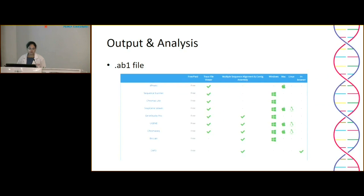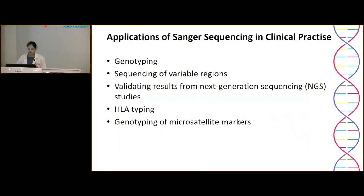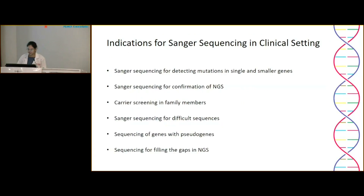Applications of Sanger sequencing include genotyping, sequencing of variable regions, validation of NGS results, and genotyping of microsatellite markers. Indications in clinical settings include single targets, single genes, or smaller genes, confirmation of NGS findings, carrier screening in family members, and for difficult sequences that don't give results in NGS.